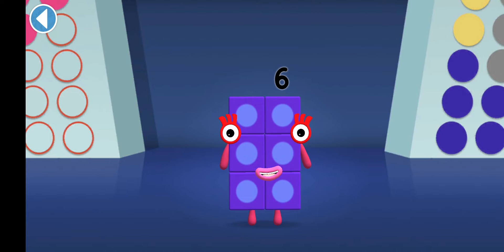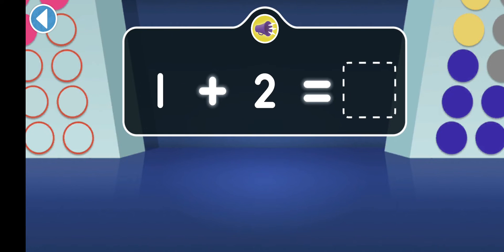Tap on the right answer. One and two are making a friend together. Which number can they make?